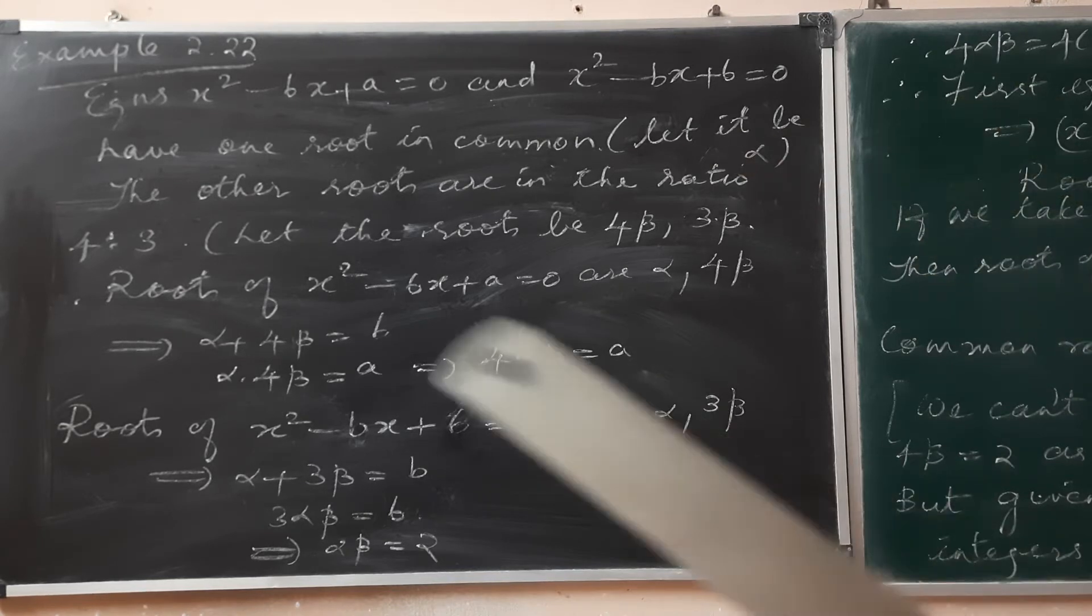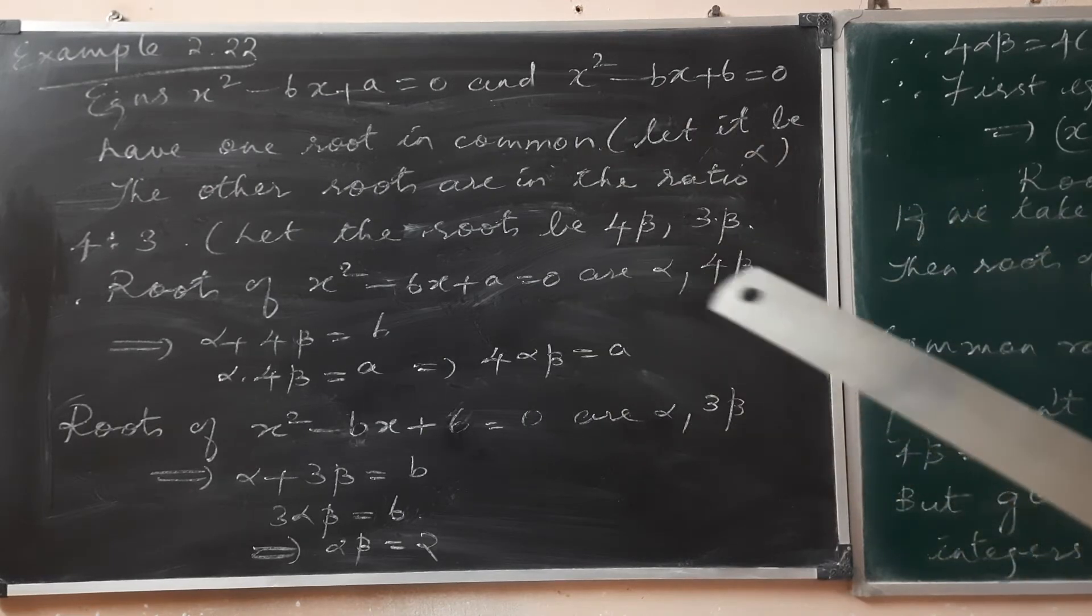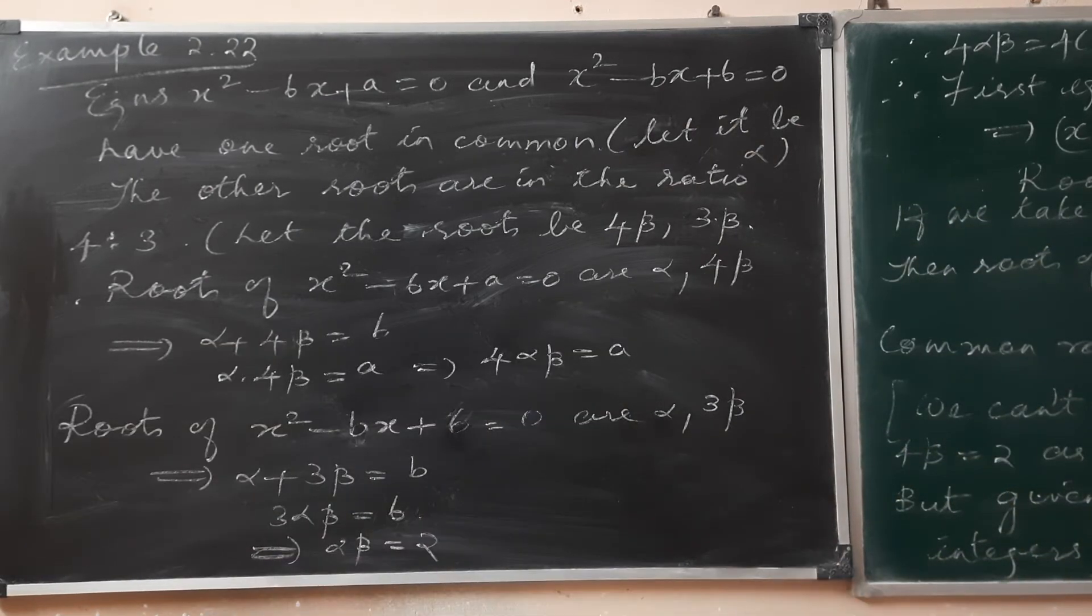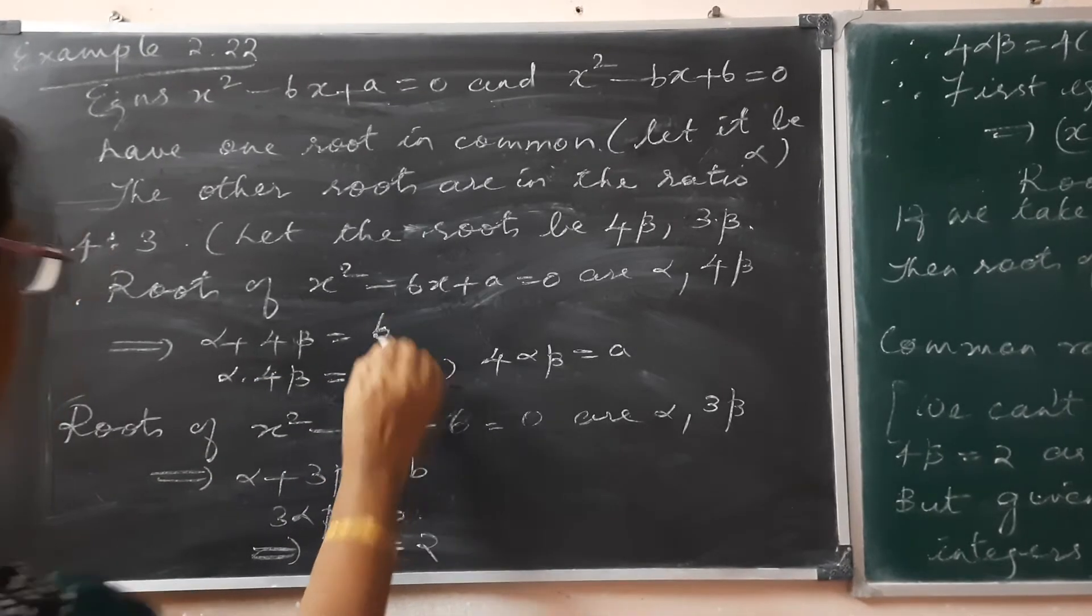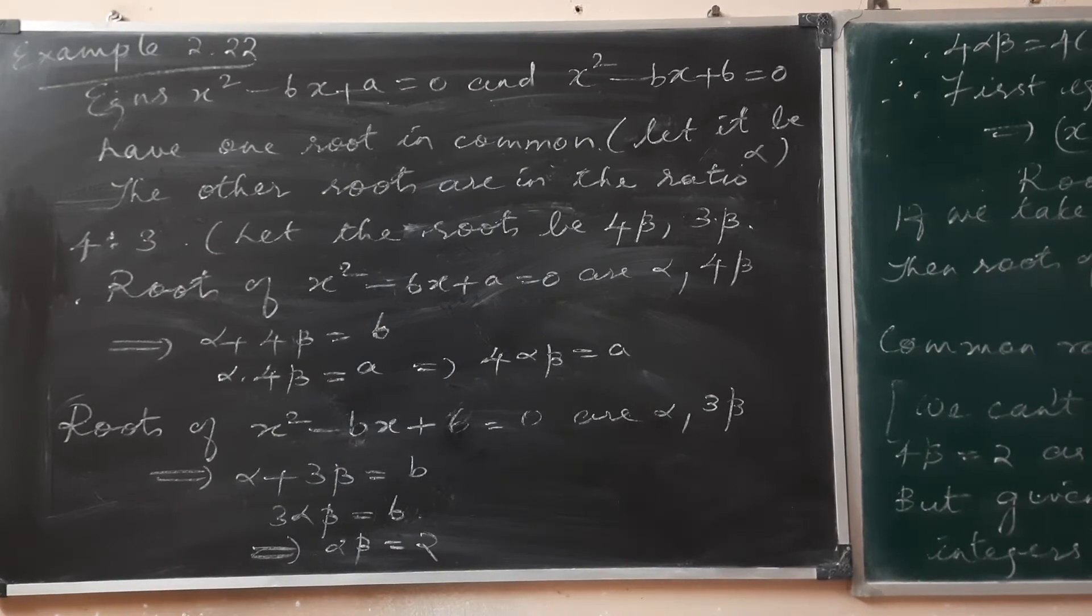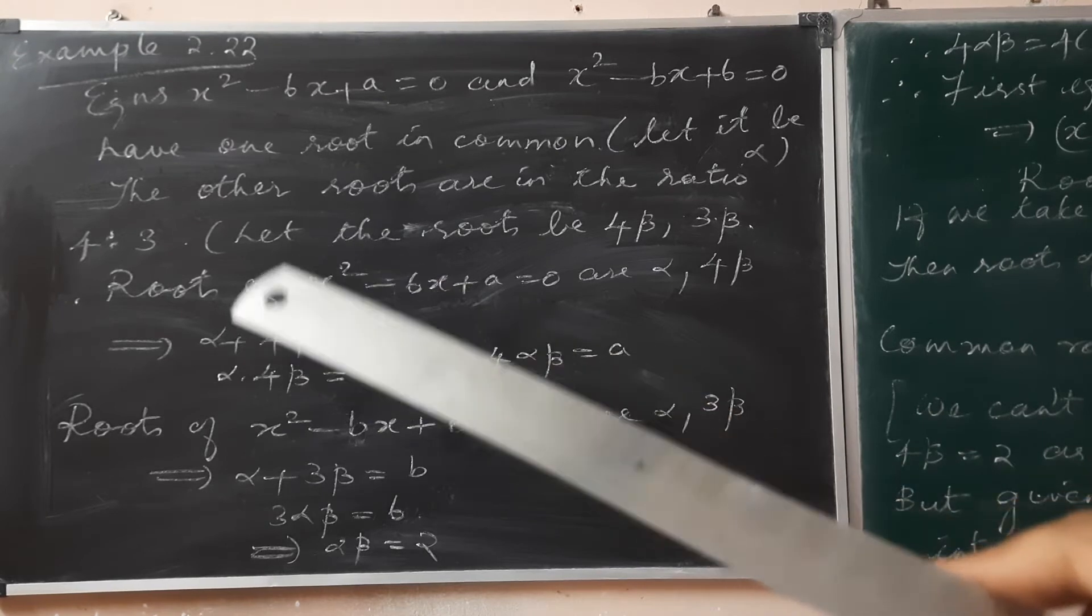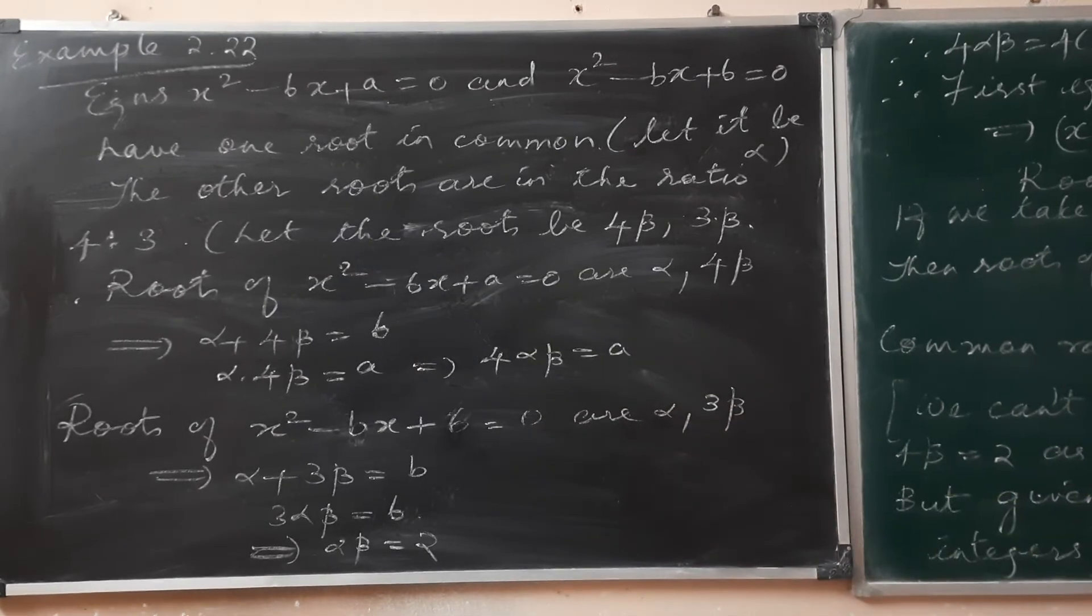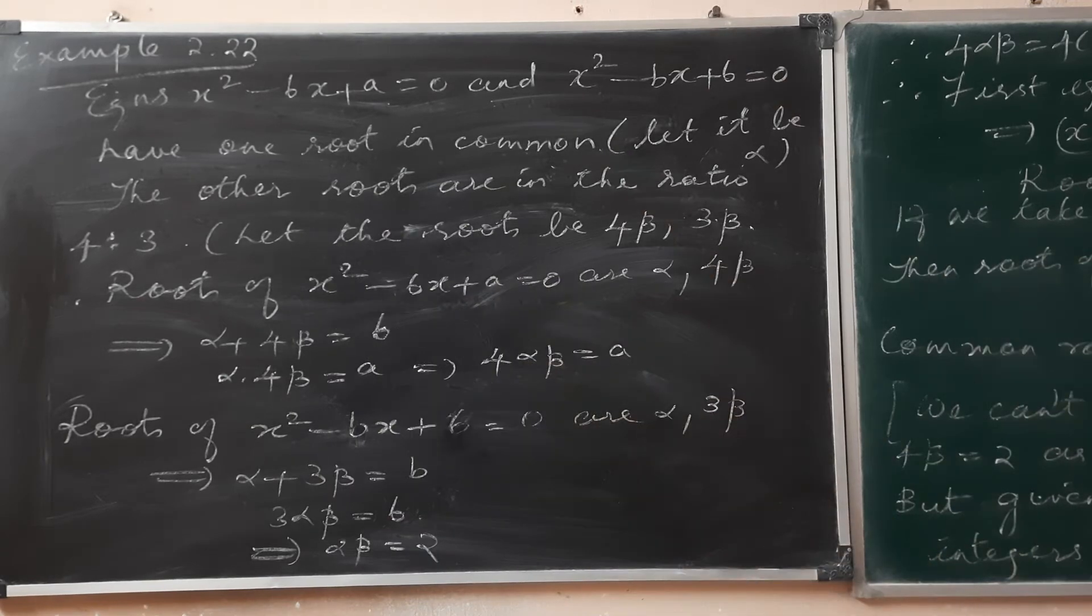So if roots of x² - 6x + a = 0 are common root α and 4β, then α + 4β = 6 and the product α·4β = a. That's 4αβ = a.